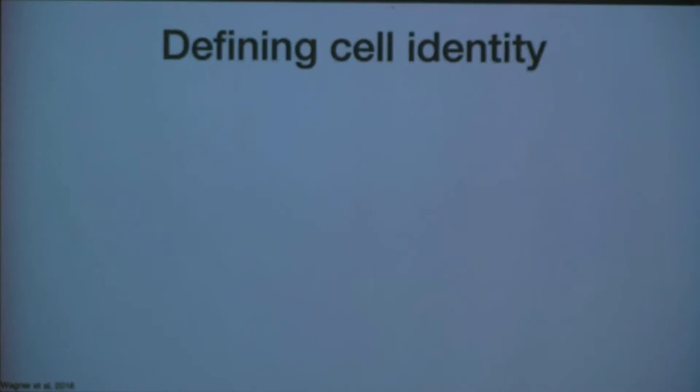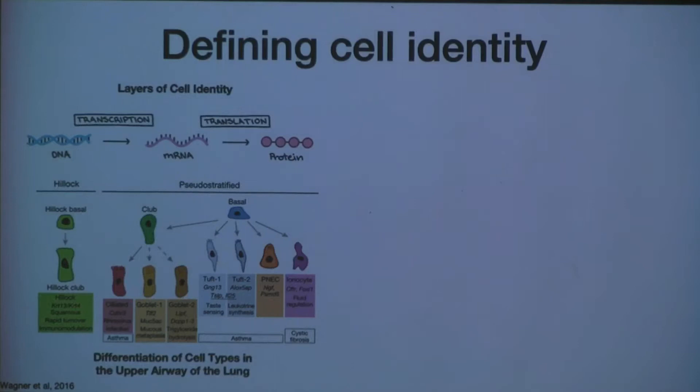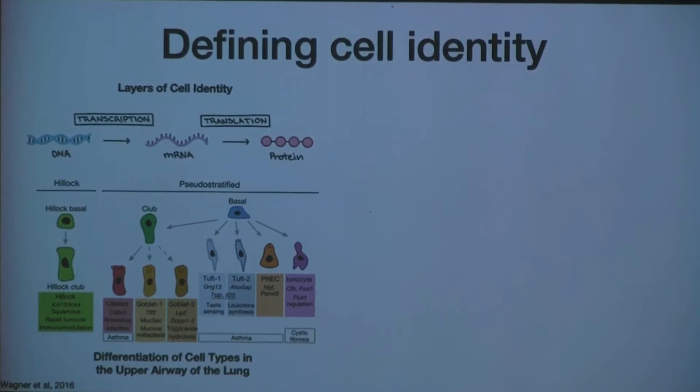Cell identity can be defined in multiple ways, but generally it's thought of as the array of functioning proteins in a cell that cause it to have a specific set of behaviors — how it interacts with other cells, its environment, or external signals. For example, different lung cell types have the same genome but very different phenotypes: ciliated cells move air and particles, club cells produce surfactant to protect the lung, and PNEC cells help with lung injury.